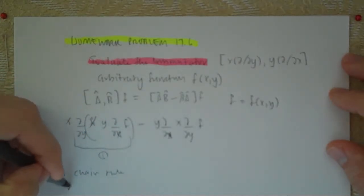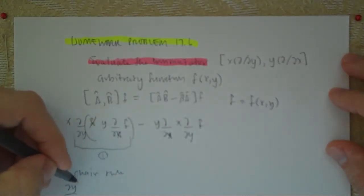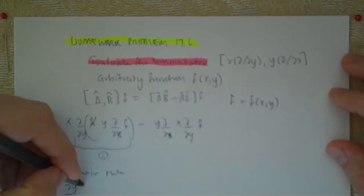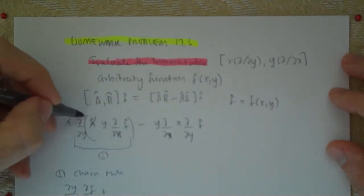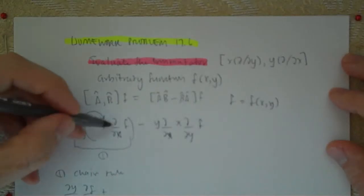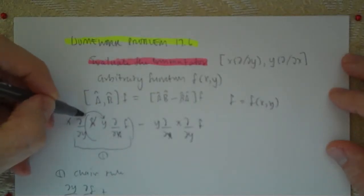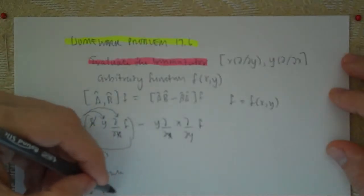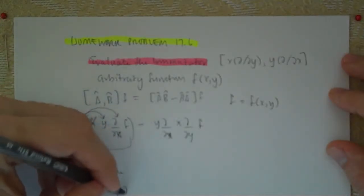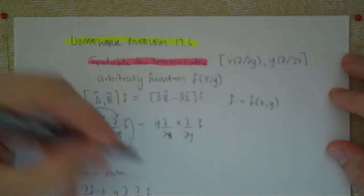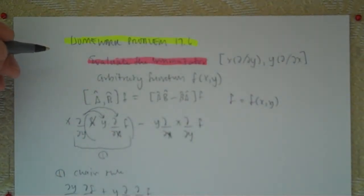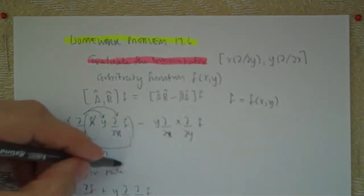So, this is going to be D/DY·DF/DX, plus. That was if I take the derivative of the first one times the second function. Now, the derivative of the second function times the first one is Y·D/DY·D/DX·F. Okay, so that's it for part one.